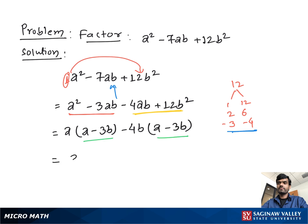From both terms, we take out (a - 3b) as common, leaving us with (a - 4b). This gives us the final factored form: (a - 3b)(a - 4b).